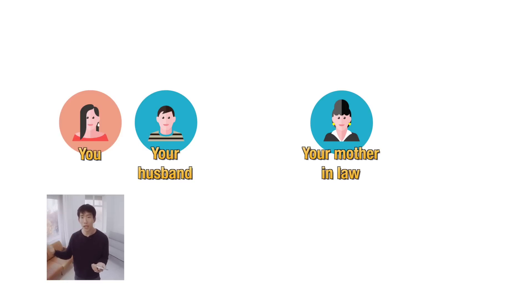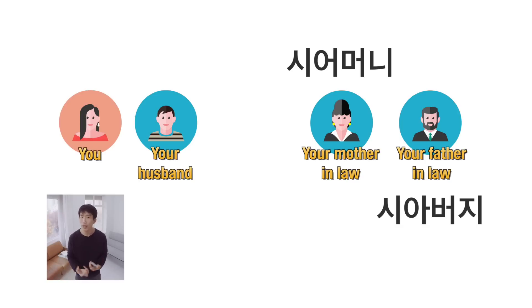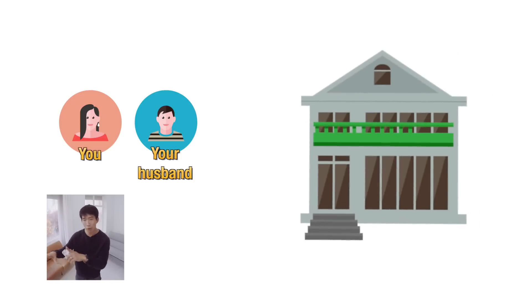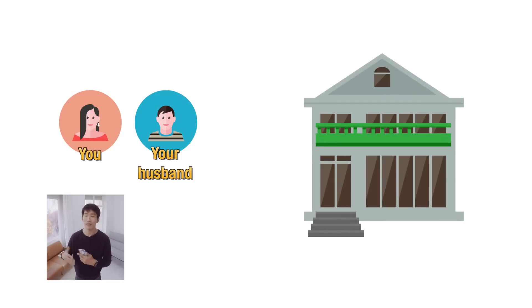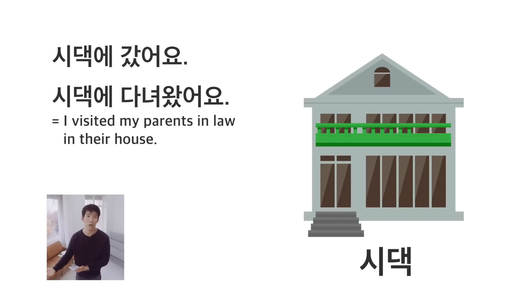Now let's talk about your parents-in-law. For women, your mother-in-law is 시어머니 and your father-in-law is 시아버지. Jokingly, some people say 시월드 — it's a slang expression. The more traditional term for the house of your parents-in-law is 시댁, so you might say '시댁에 갔어요' — meaning you visited your parents-in-law at their house. 시월드 is a spin-off of the English word 'she-world,' anyway.